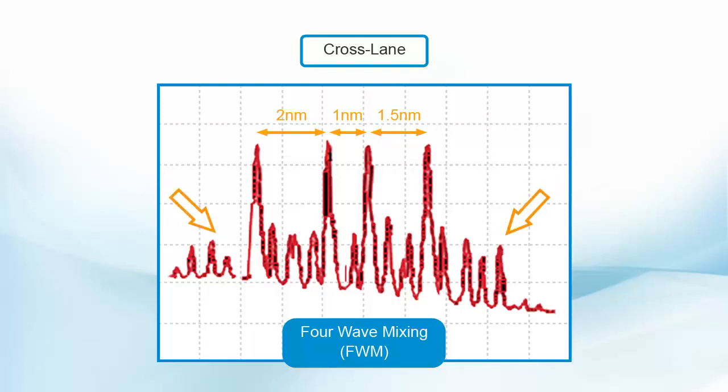These byproducts cause two problems. One, they rob power from the main signals, a minor problem, and two, they can be situated at a signal wavelength and cause interference or crosstalk. Here you can see unevenly spaced signal wavelengths to illustrate the FWM mixing, but real systems have evenly spaced wavelengths where the unwanted byproducts would interfere directly.